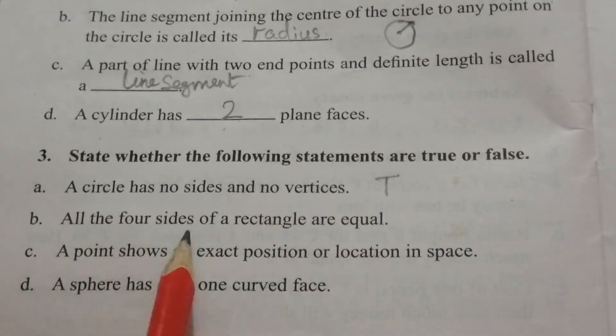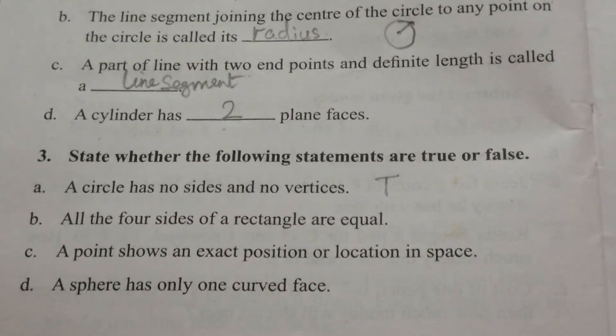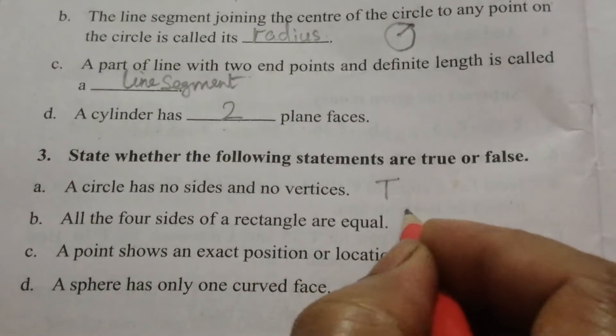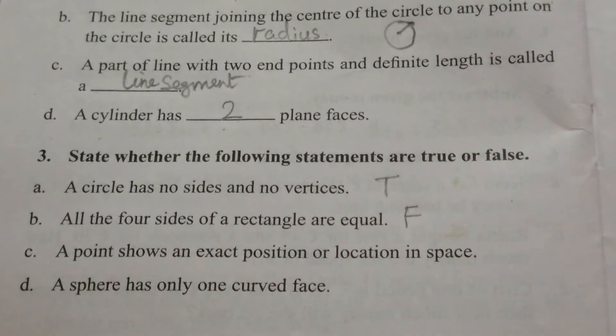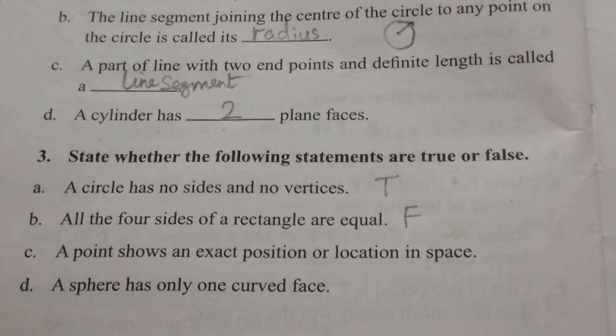B. All the four sides of a rectangle are equal. It is a false statement because in a rectangle, opposite sides are equal. All four sides are equal in a square.